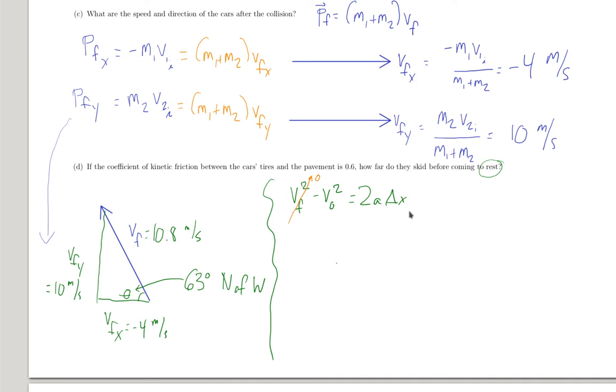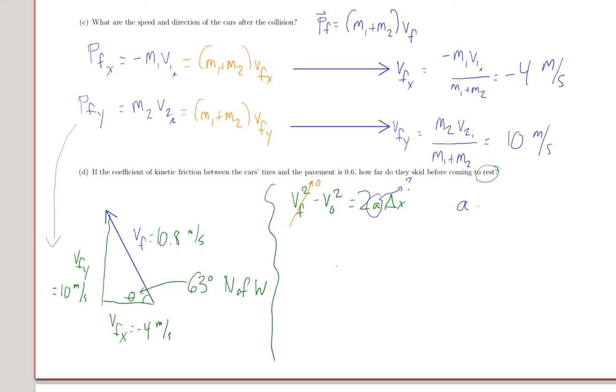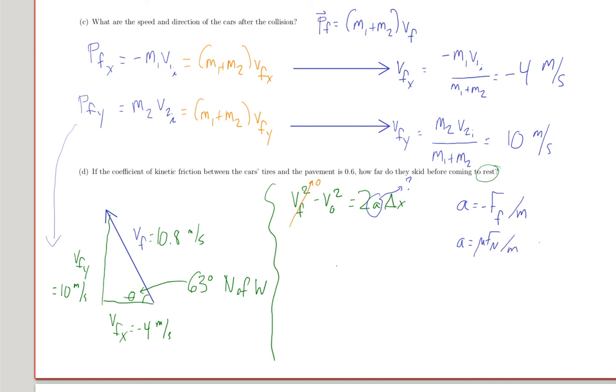So I know the initial velocity, 10.8 meters per second. I want to find the distance traveled, but I need to know the acceleration. Well, the acceleration here is going to be negative because I'll just decide that, opposite of the direction of motion. This is a one-dimensional problem. So that's going to be the force of friction divided by the mass, which is the combined mass of the cars. This is the normal force times the coefficient of friction divided by the mass. The normal force will just be mg. So the acceleration is just mu g.